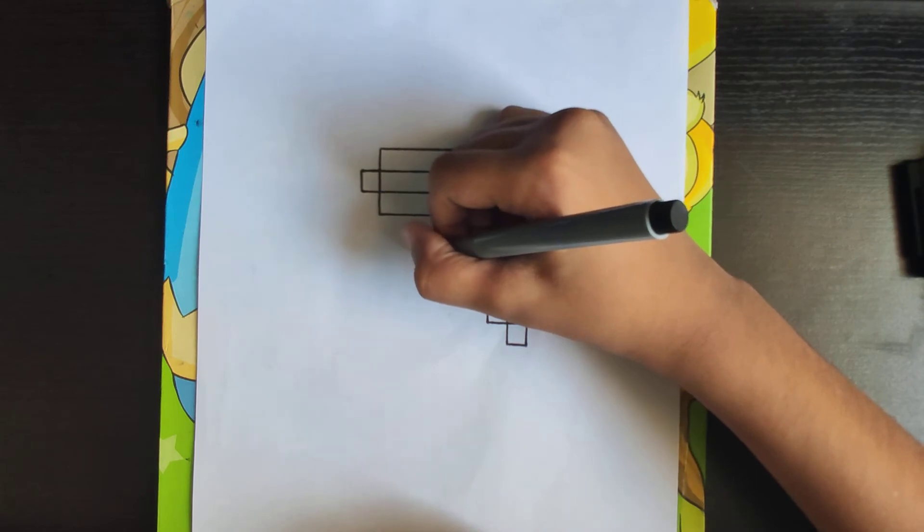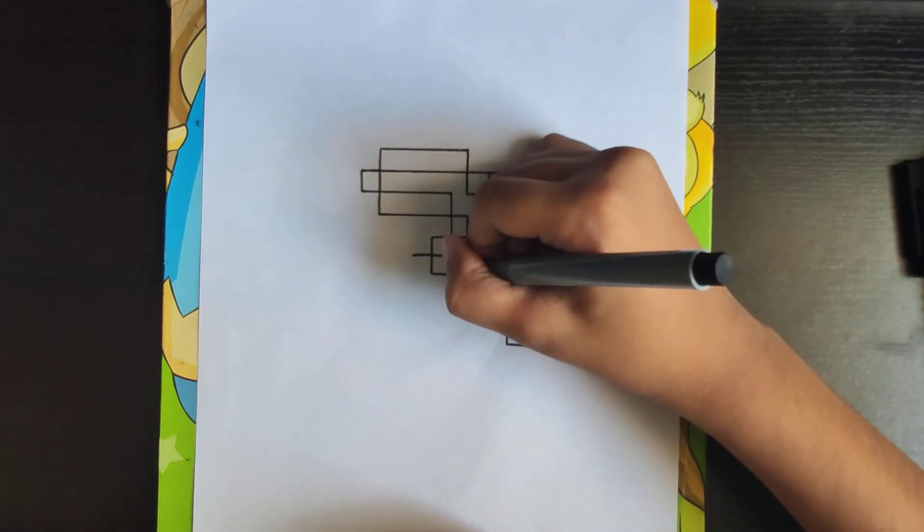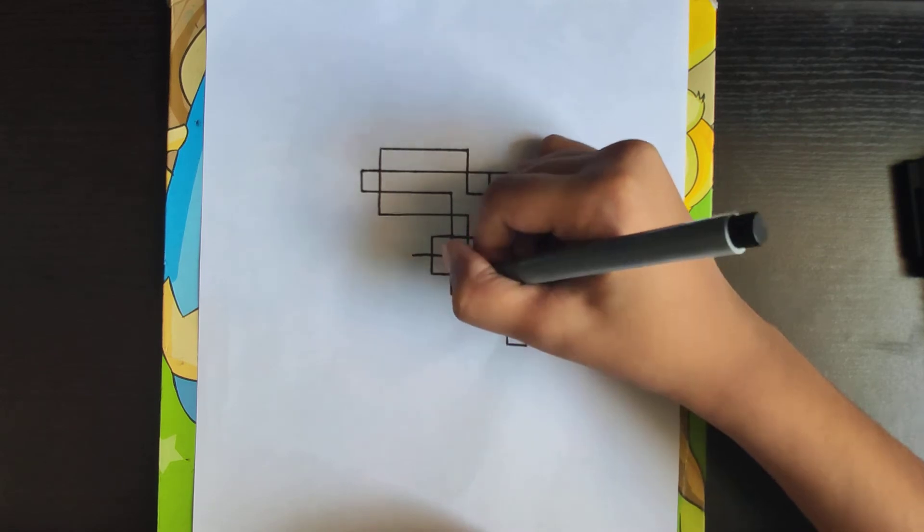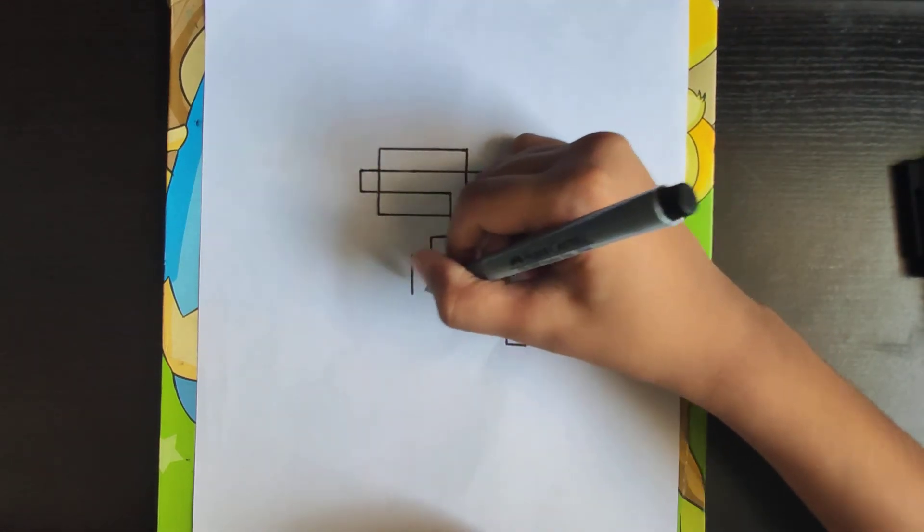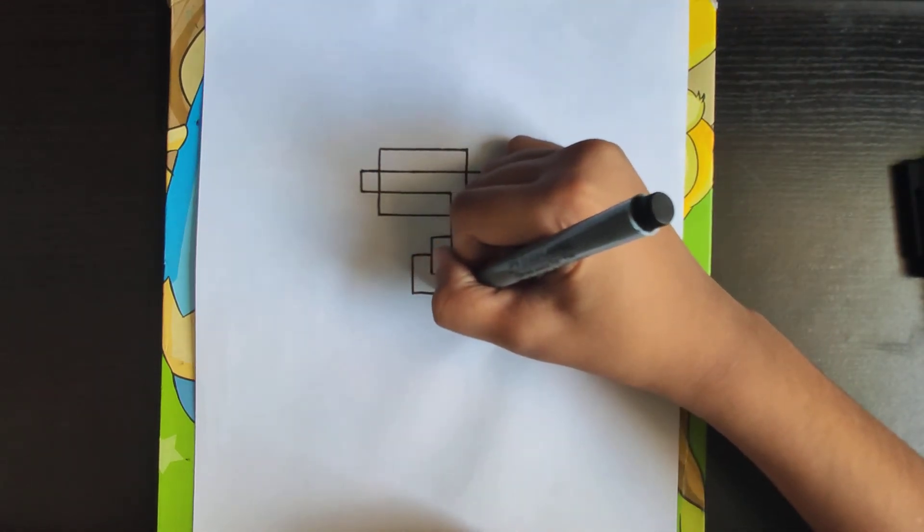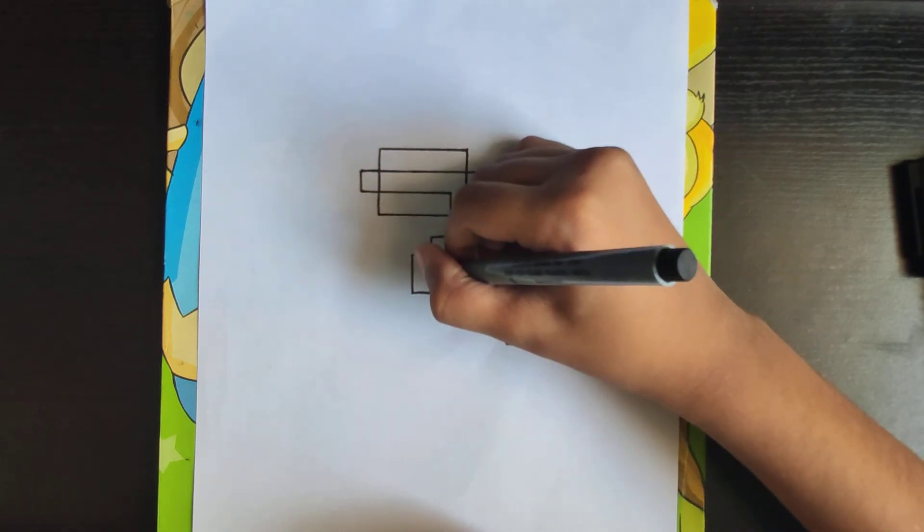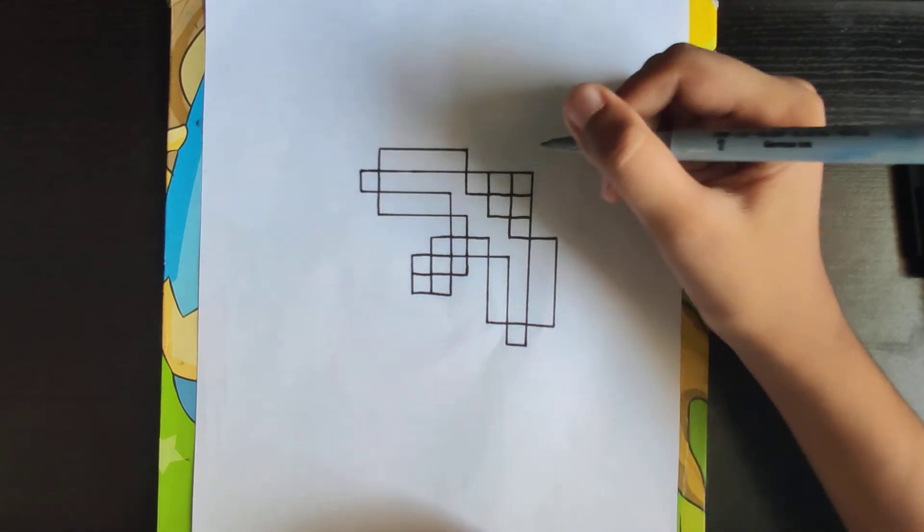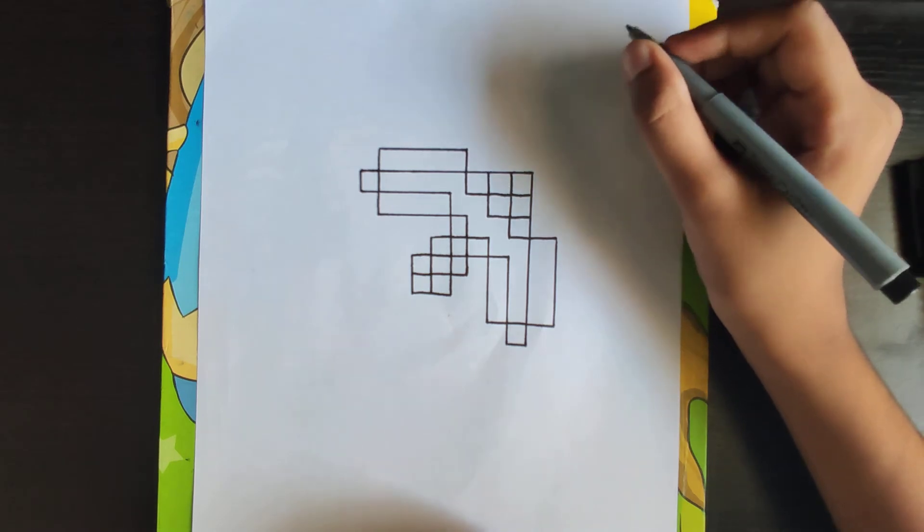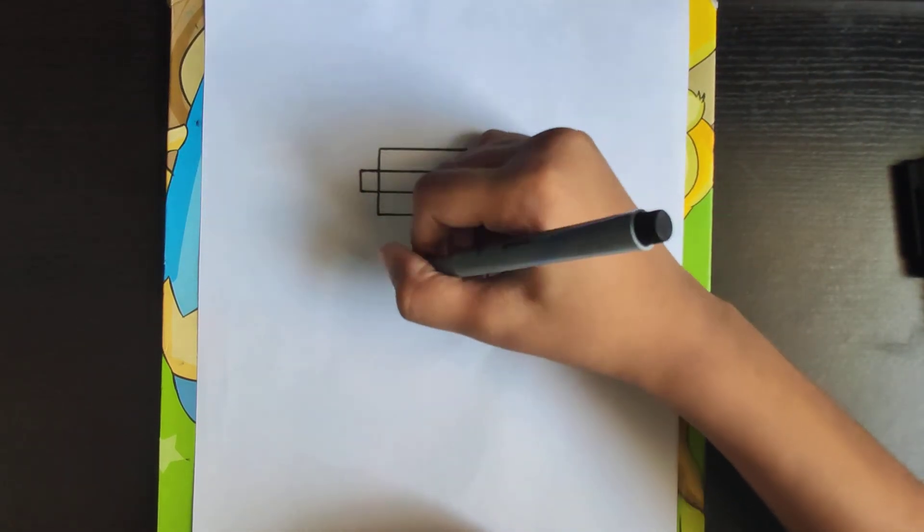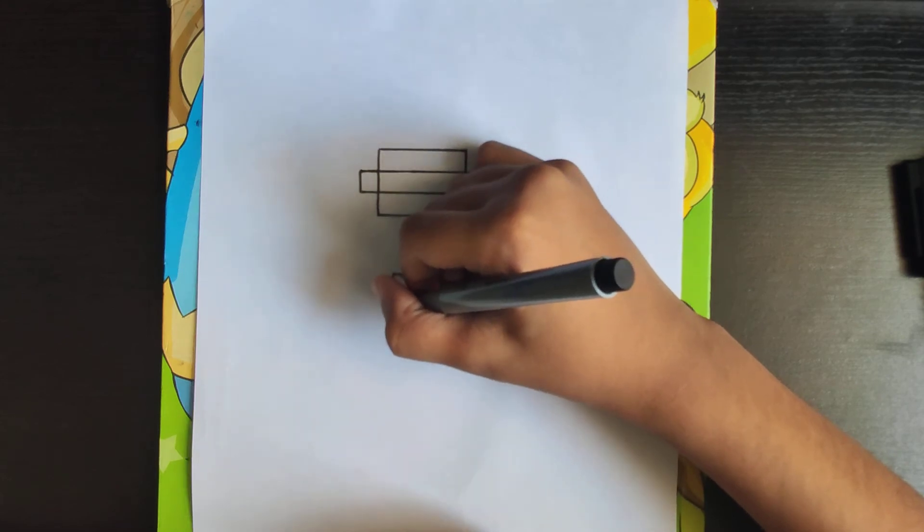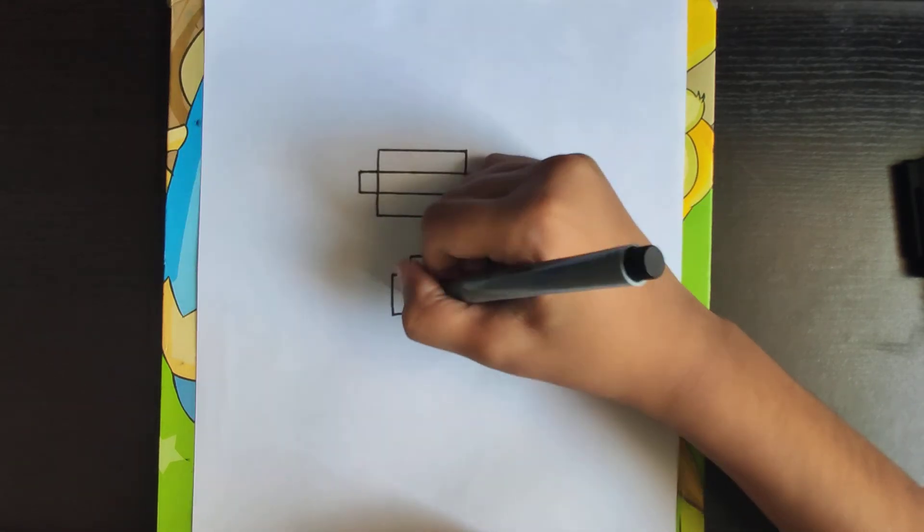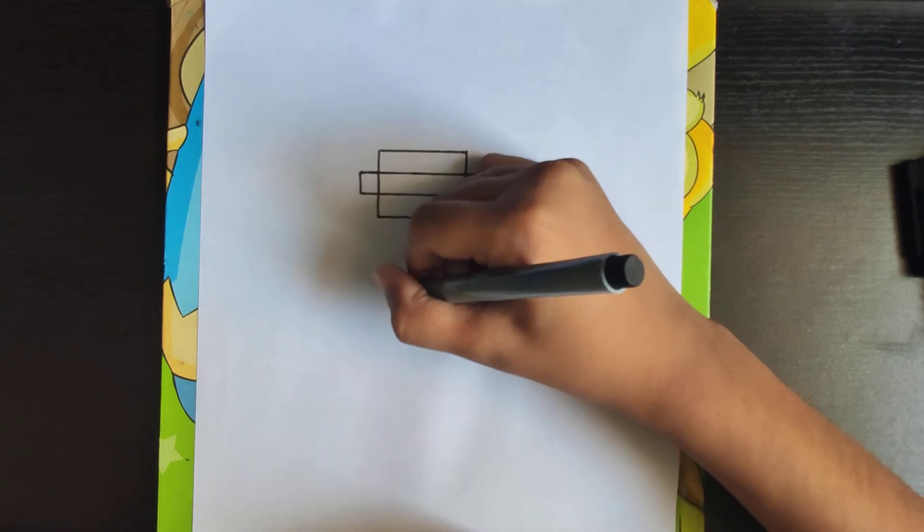Now another line, take this line down like this and complete this box. Two lines. Now you have to continue like this. Join this line and two boxes.